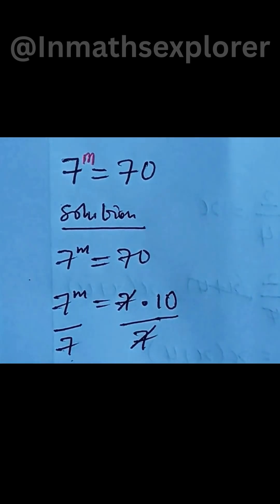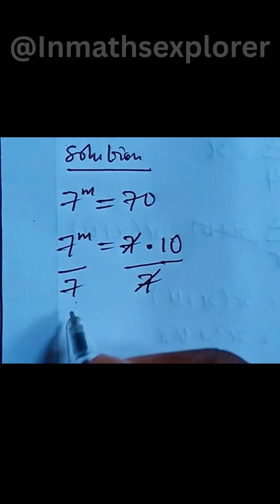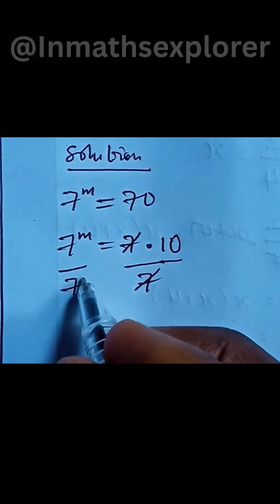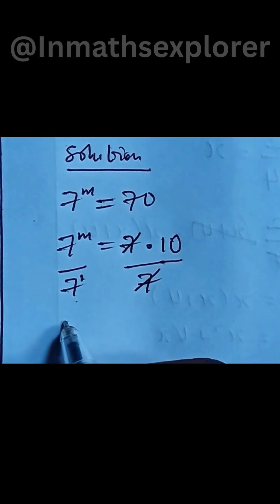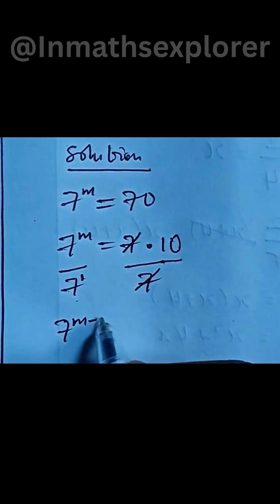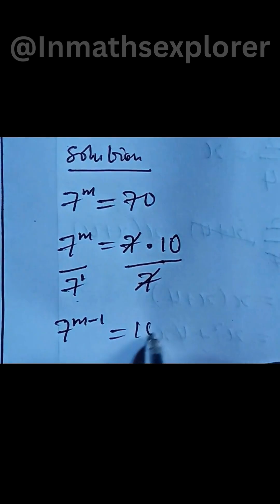So this can solve with this and this retains a power of 1. So this can now be written as 7 to the power of m minus 1, which will be equal to 10.